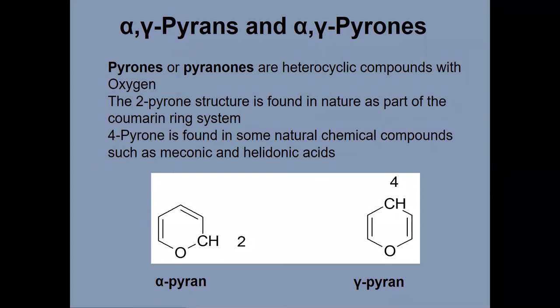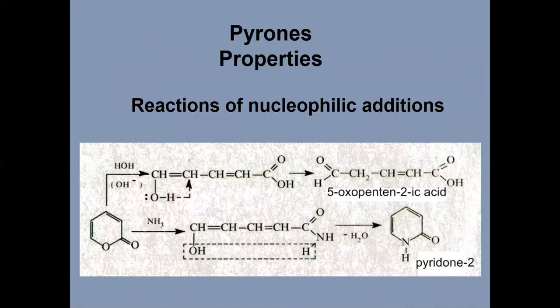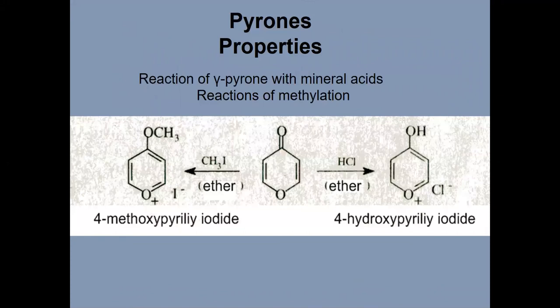Pyrans and pyrones are heterocyclic compounds with oxygen. 2-pyrone structure is found in nature as part of the coumarin ring system. 4-pyrone is found in some natural chemical compounds such as meconic and chelidonic acids. Pyrones — chemical properties: reactions of nucleophilic additions, reactions of gamma-pyrone with mineral acids, and reactions of acylation.